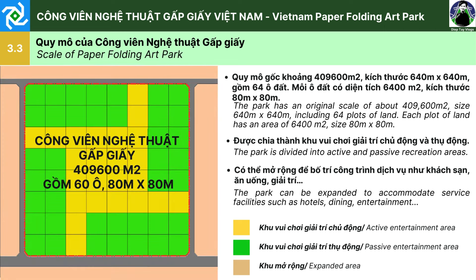3.3. Quy mô của công viên nghệ thuật gấp giấy. Công viên có quy mô gốc khoảng 409.600m², kích thước 640x640m, gồm 64 ô đất, mỗi ô đất có diện tích 6.400m², kích thước 80x80m. Công viên được chia thành các khu vui chơi giải trí chủ động và thụ động. Công viên có tiềm năng mở rộng bên ngoài để bố trí các công trình dịch vụ như khách sạn, ăn uống, giải trí, v.v.